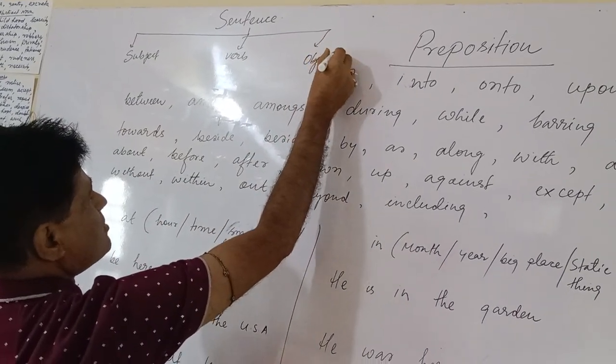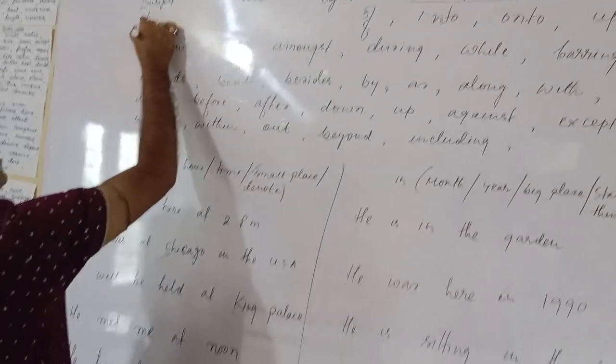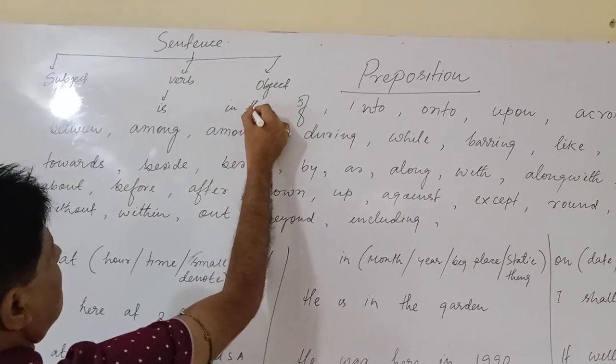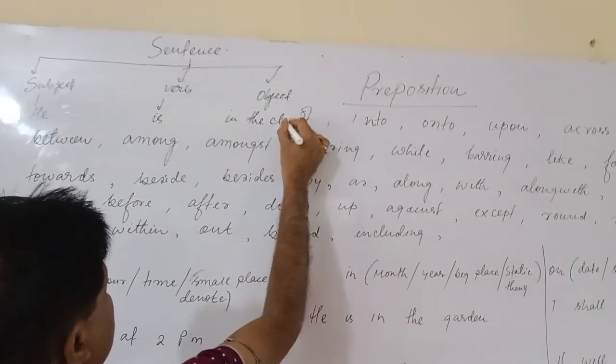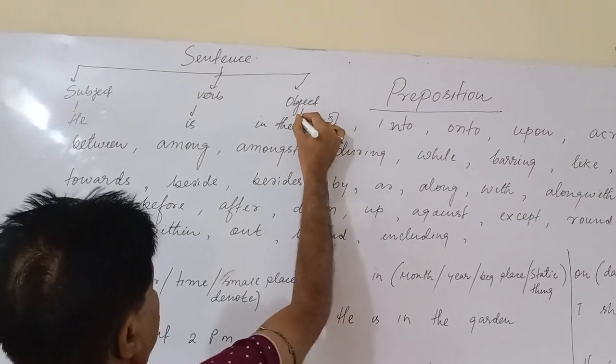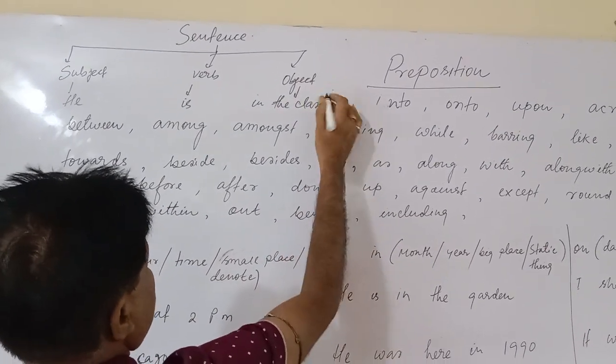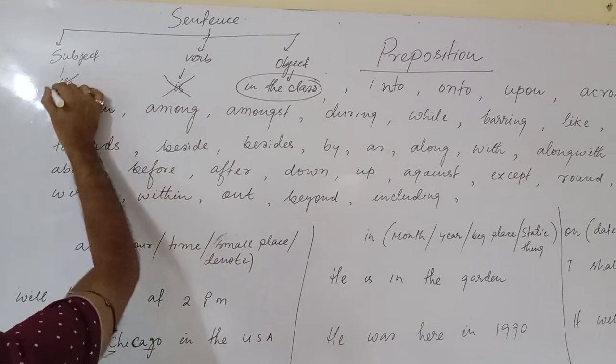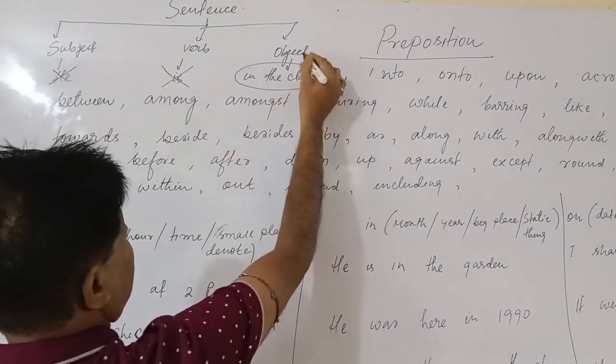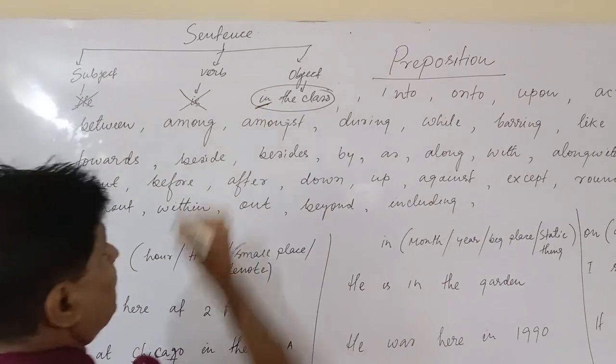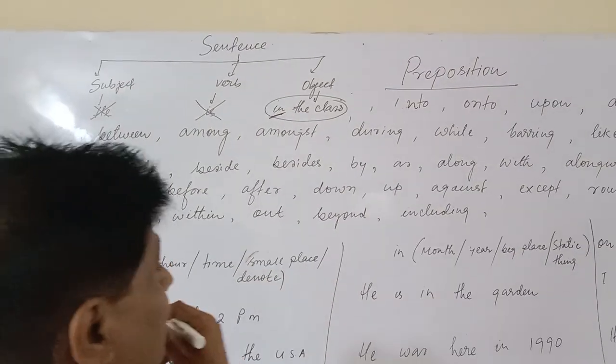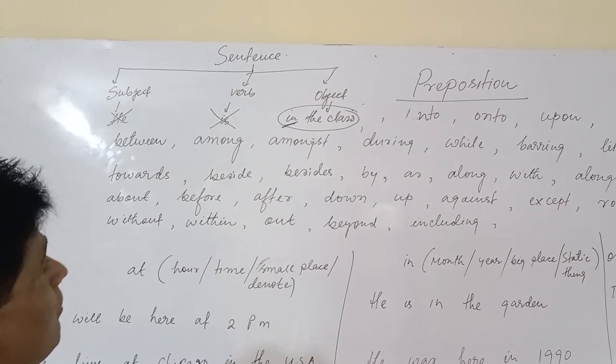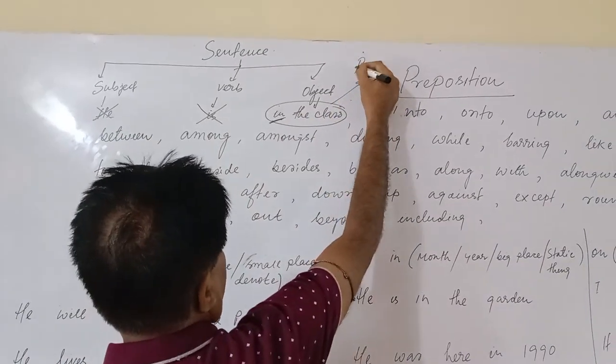If you make a sentence like that, he is in the class. So this portion is called phrase. You are not using verb or subject. While making an object, you are using a preposition to make, give the direction of noun. This one is called phrase.